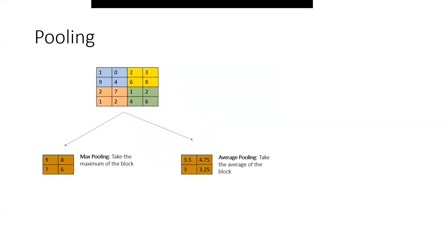Now, what is pooling? Once we pass our output layer through the activation function, we get a matrix. From here, there are two types of pooling: max pooling and average pooling. For max pooling, we need to define the size of the pooling window. If we have this particular matrix, we define a pooling size of two by two, and we check what the maximum or most important features are in that region.